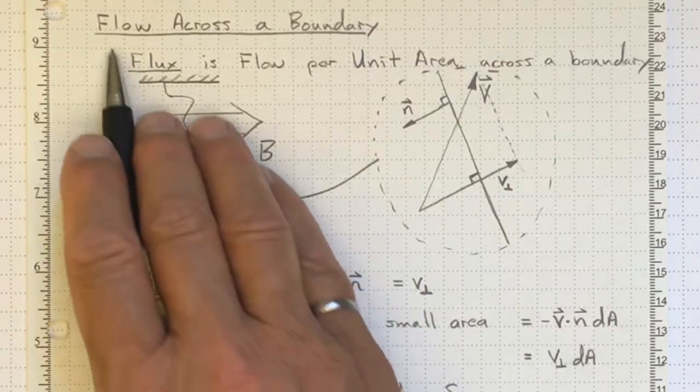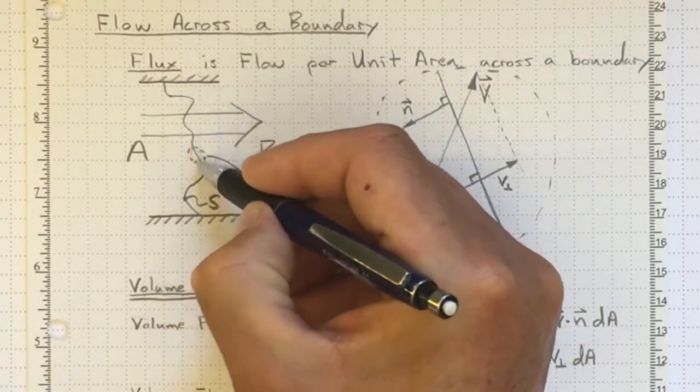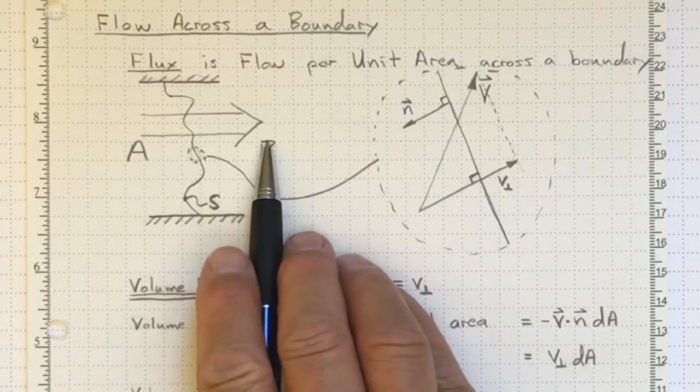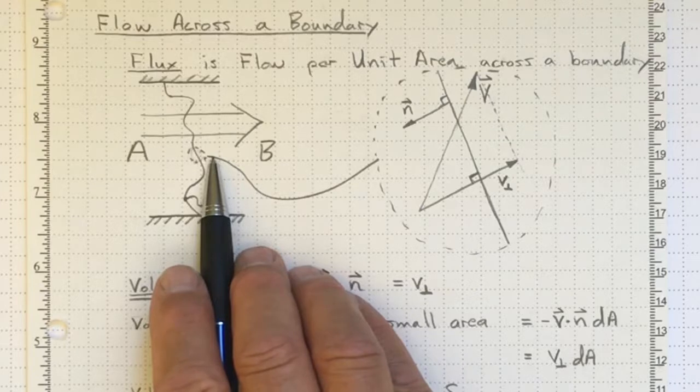To understand what's going on, we need to look at a boundary in space. So let's have this line represent a boundary, and we're interested in fluid that's traveling from A to B across this boundary, and what it's taking with it: how much mass, momentum, and energy.